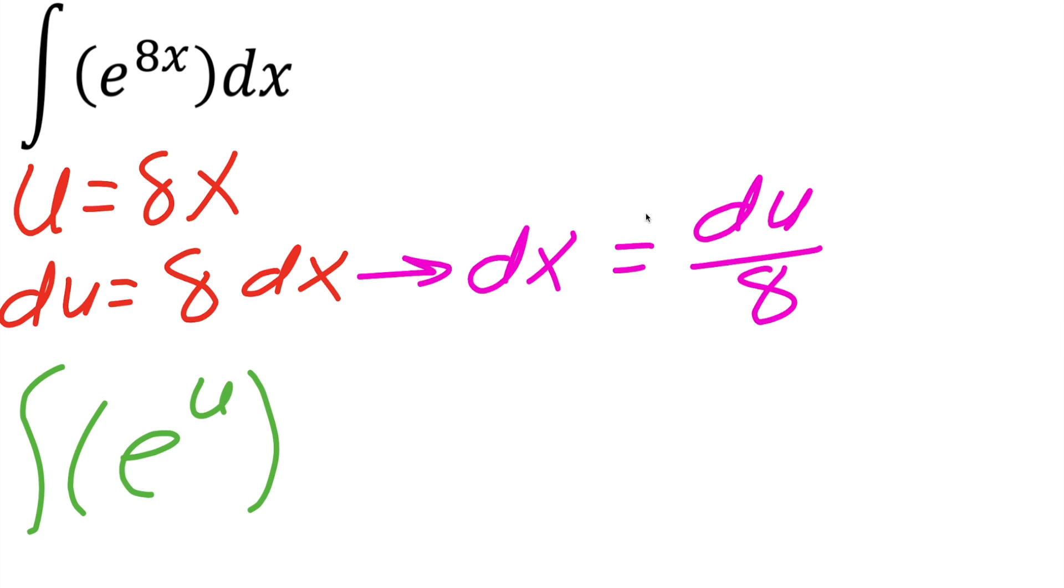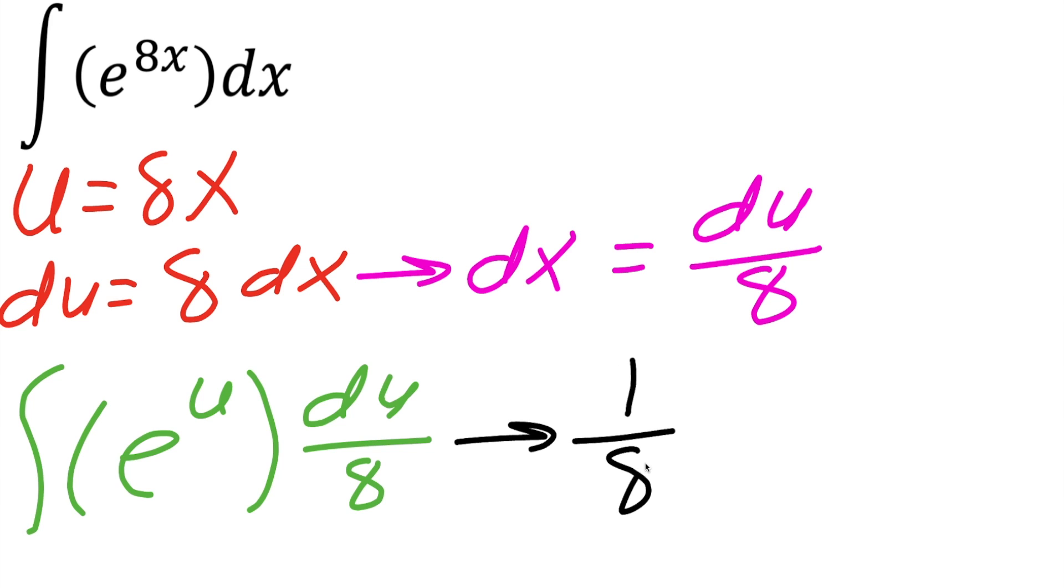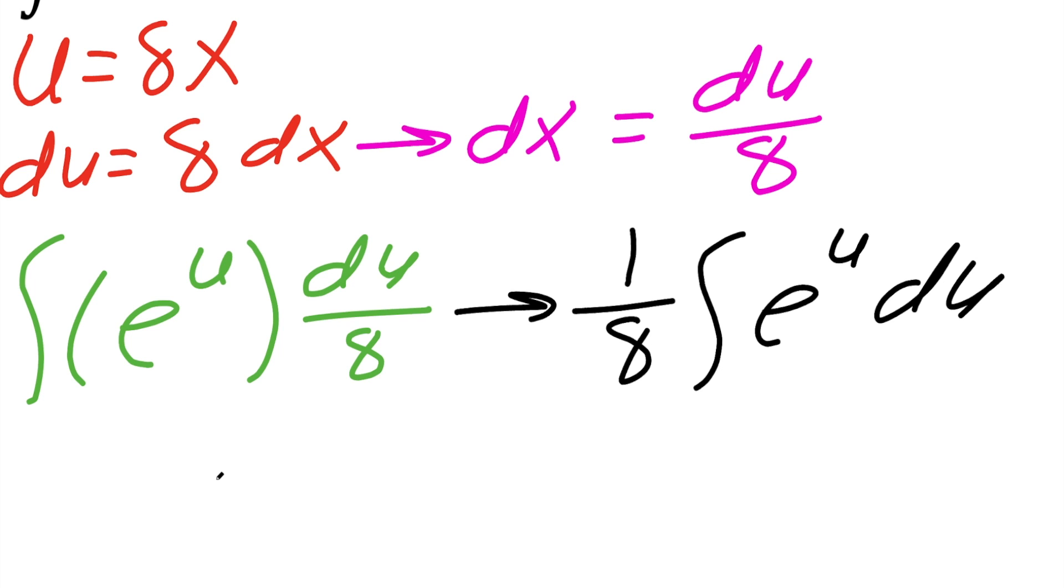Now replace dx with du divided by 8, and we can rewrite this as 1 divided by 8, the integral of e raised to u du. We just moved the 1 over 8 outside of the integral, and now we can solve this problem.